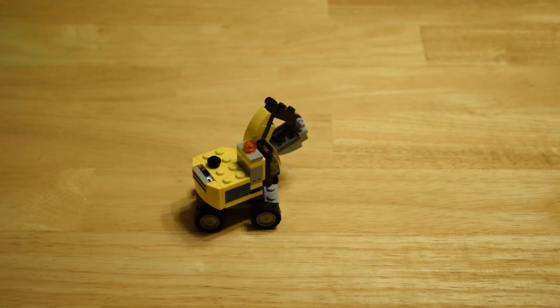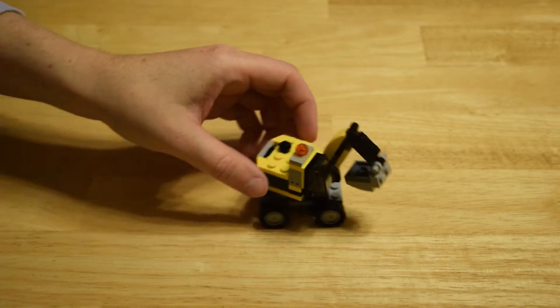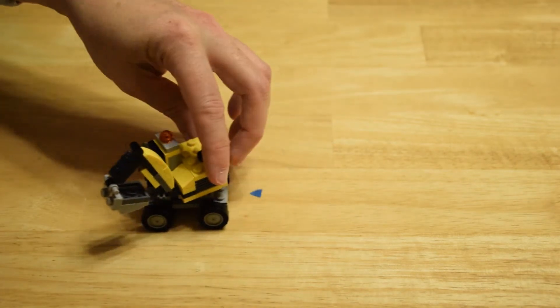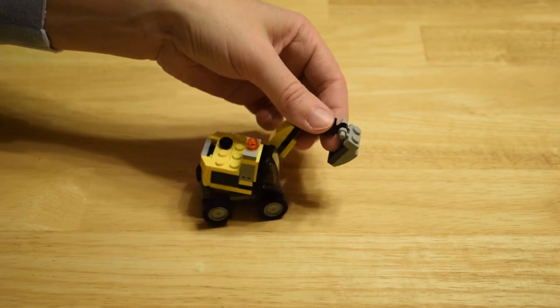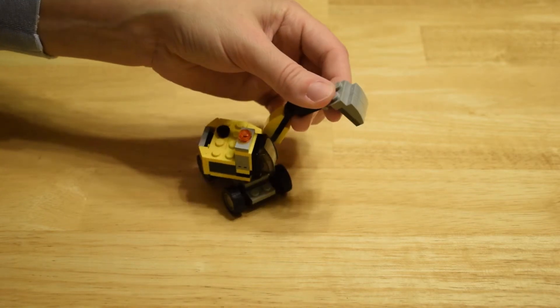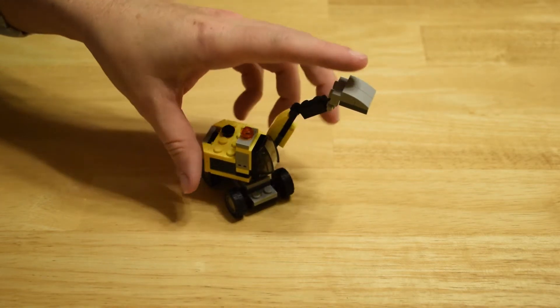So I like this thing. Again, it is the Power Digger. It's 64 pieces. It's designed for ages 6 to 12, and it's item number 31014, Lego Creator.